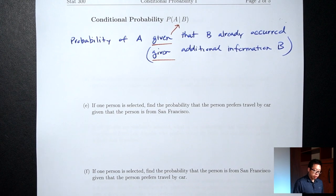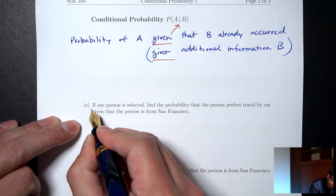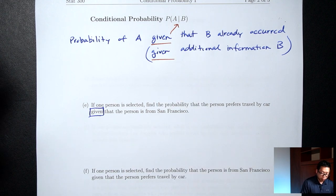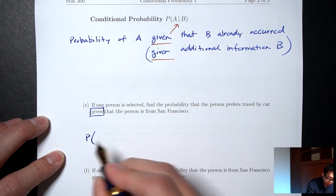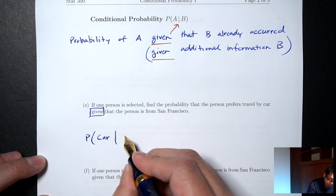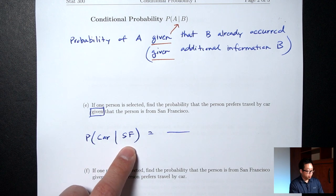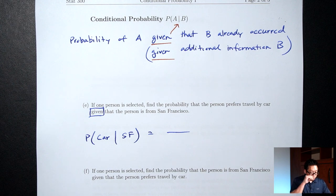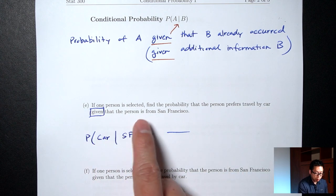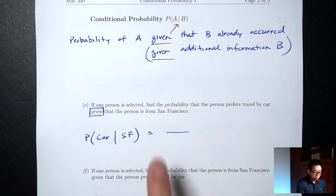Part E: if one person is selected, find the probability that the person prefers travel by car, given that the person is from San Francisco. The keyword 'given' means I'm looking for a conditional probability: P(car | SF). This is telling me the person is definitely from San Francisco, so I can narrow down my table to just the San Francisco numbers. The given part — the second part — is telling me to focus on the San Francisco numbers.